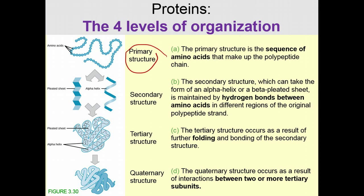Primary structure refers to the sequence of amino acids — not a shape, but simply the order in which amino acids are connected. In secondary structure, shape begins to emerge. Two common secondary structures are the alpha helix and the beta sheet, both held together by hydrogen bonds between amino acids.